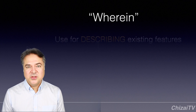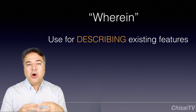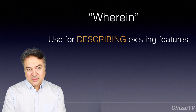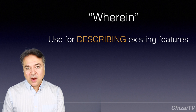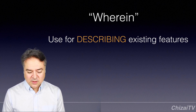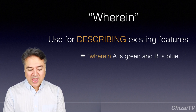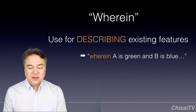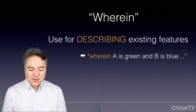Wherein is used to describe existing features — features that you already introduced with comprising, for example. You can use wherein to further describe those existing features. From our claim before, we had an apparatus comprising A and B. Then you can further describe A and B.